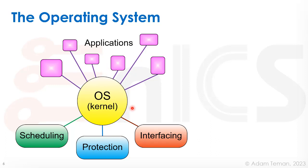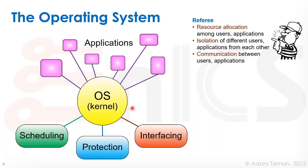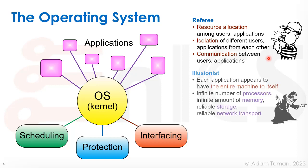We can see the operating system as a referee that allows resource allocation among users and applications, isolation of different users and applications from each other, and provides a means of communication between users and applications. We can also see it as an illusionist — it allows each application to appear as if it has the entire machine to itself. We already discussed that in depth when we discussed virtual memory.